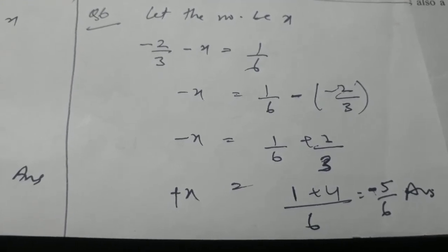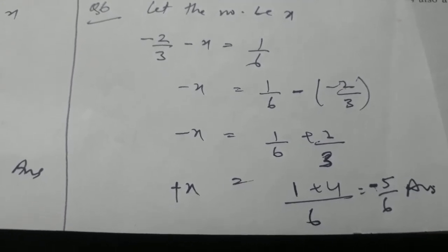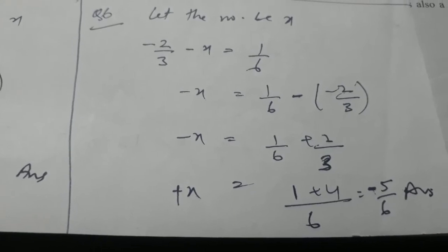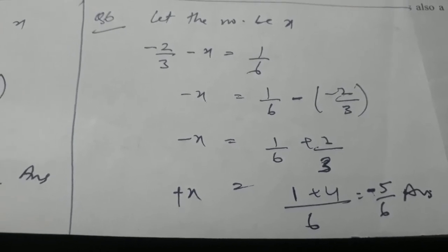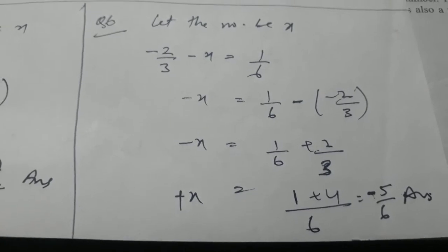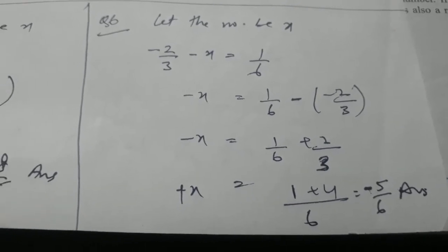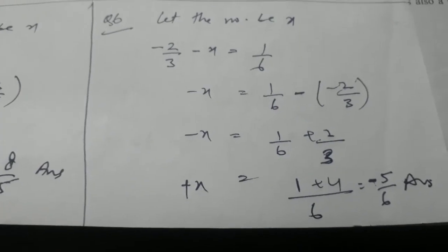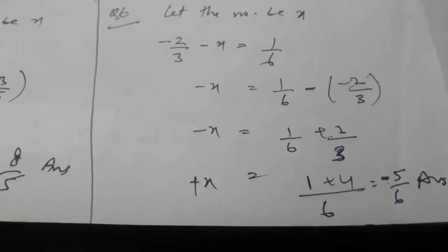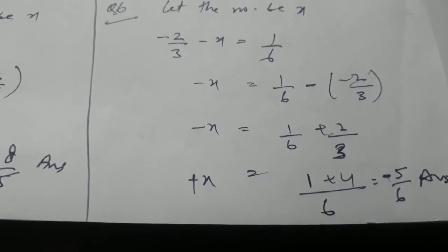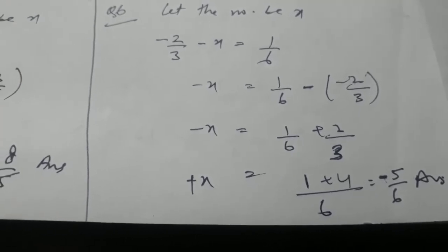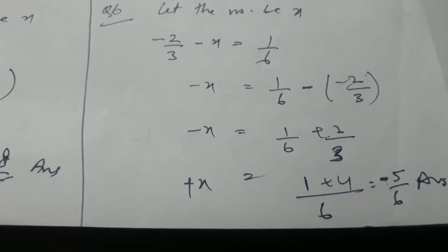In question number 6, a number is to be found out that should be subtracted from minus 2 by 3 to get 1 by 6. So we will assume that number as x. According to the question, that number would be subtracted from minus 2 by 3. The equation will be minus 2 by 3 minus x equal to 1 by 6.